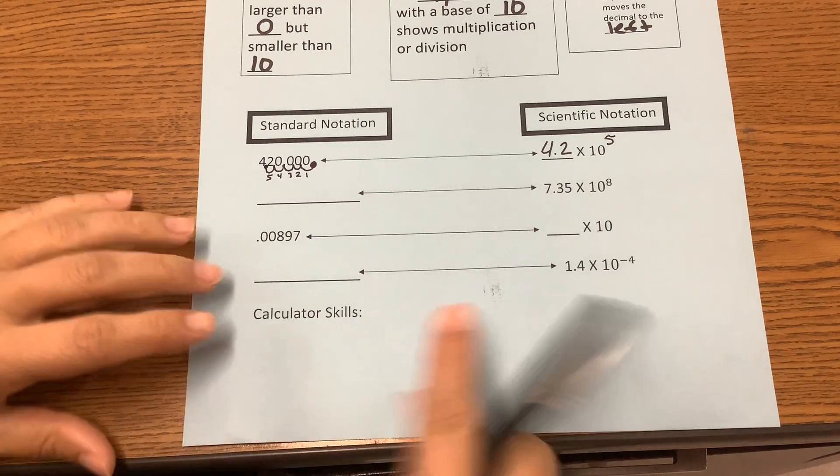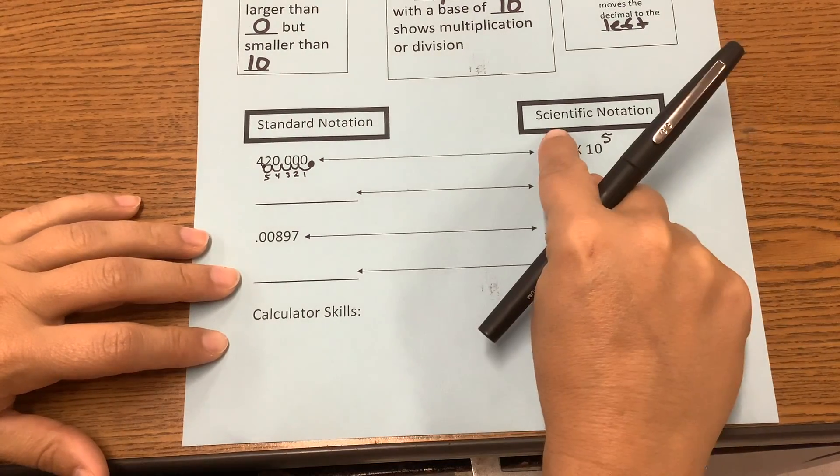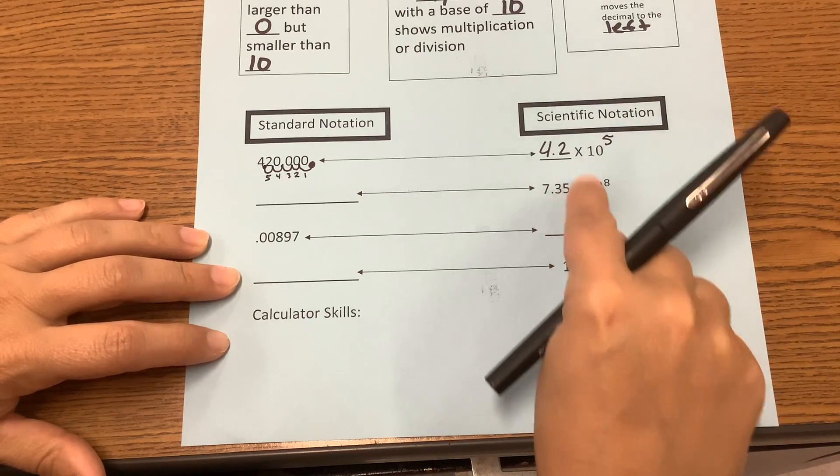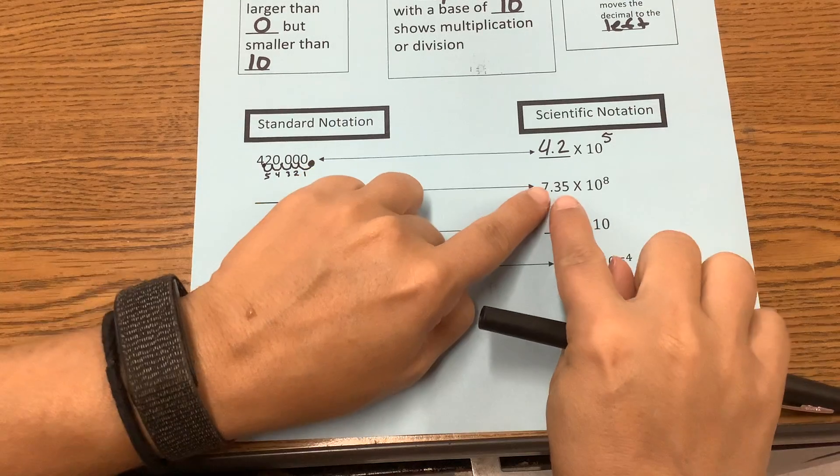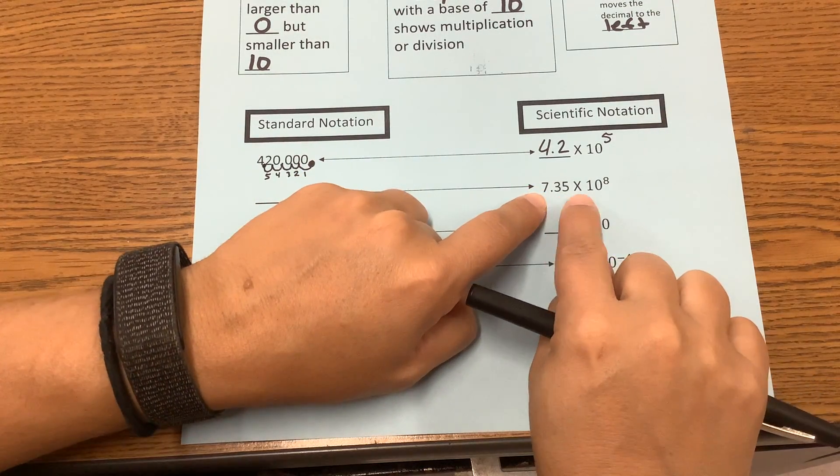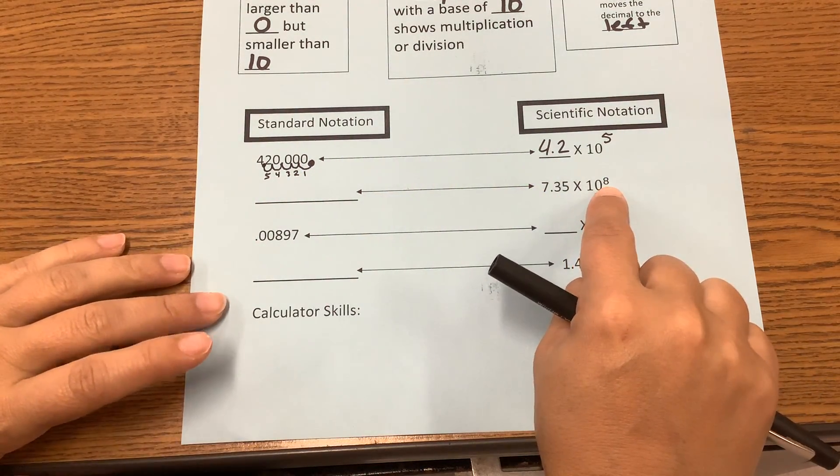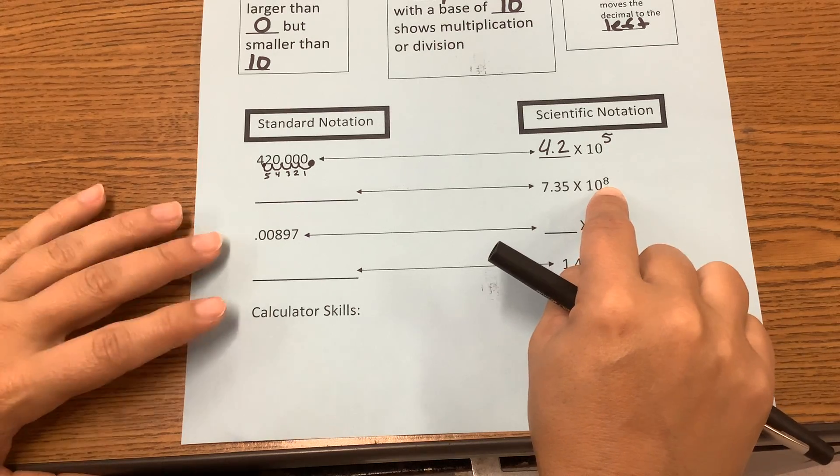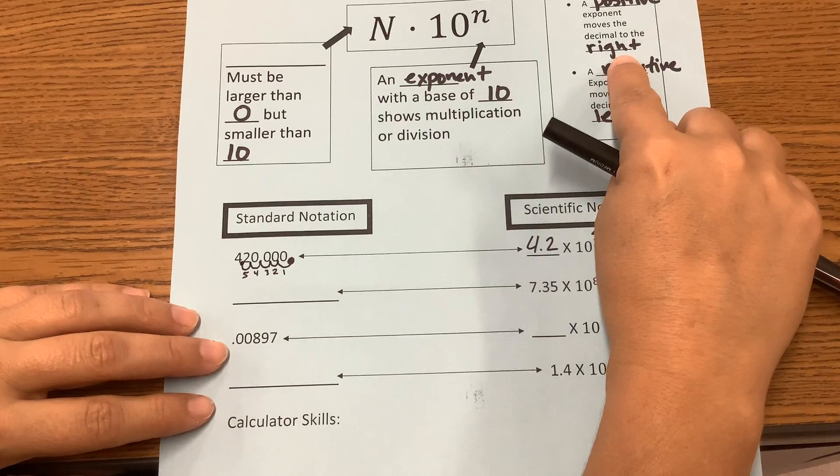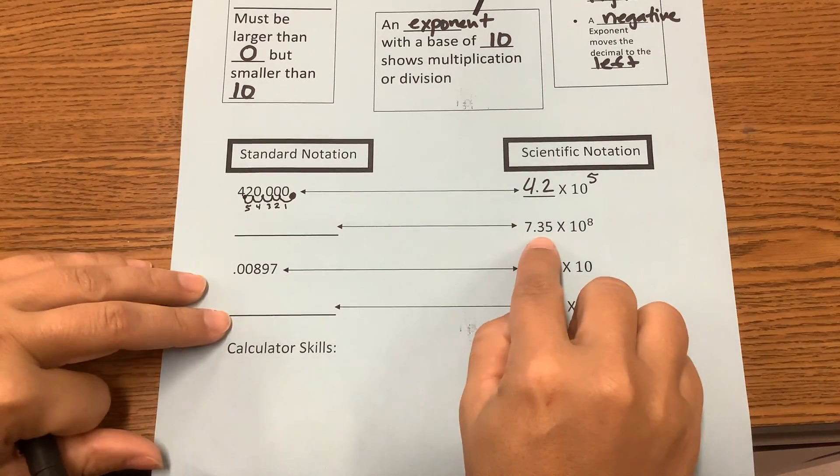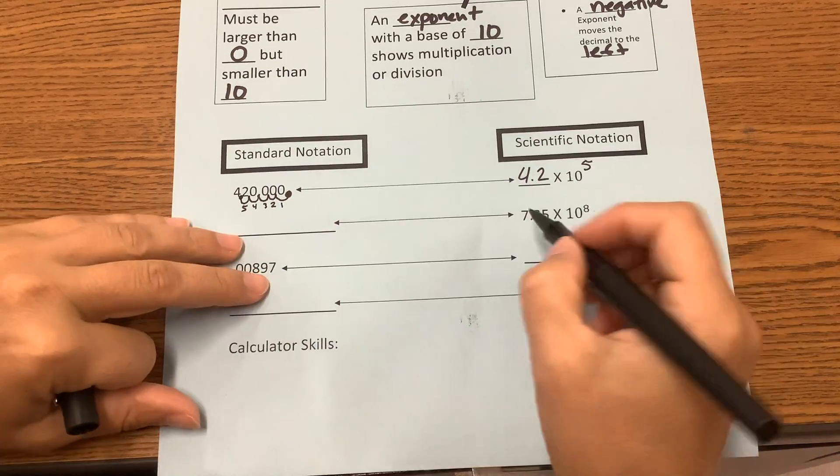Okay, now what if we were given scientific notation and we're supposed to work backwards to standard notation? Well, look what we have. We have 7.35 times 10 to the 8th. 8 is positive. That means we move our decimal to the right. So we take 7.35 and we move our decimal to the right.